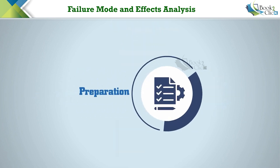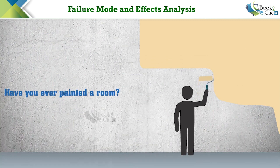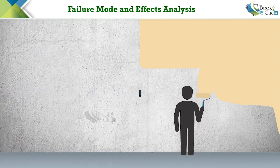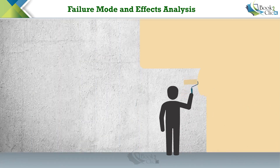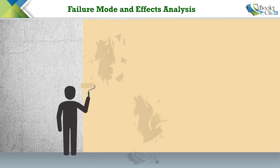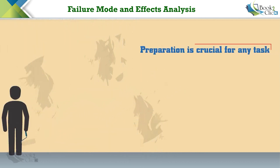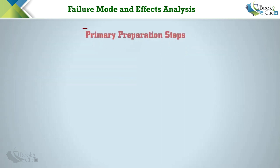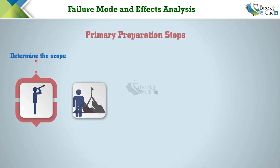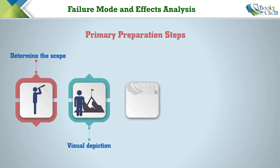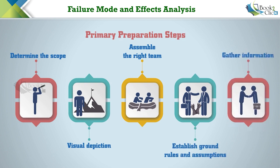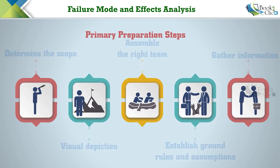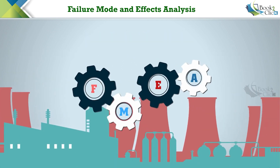If you ever painted a room in a house, there are many tasks required to prepare the wall before the paint is applied correctly. Skipping any of the preparation tasks will negatively affect the results. So preparation is crucial for any task. The primary preparation steps for doing FMEA are: determine the scope, visual depiction, assemble the right team, establish ground rules and assumptions, and gather information. All these preparation steps must be done thoroughly for FMEA to be successful and completed promptly.